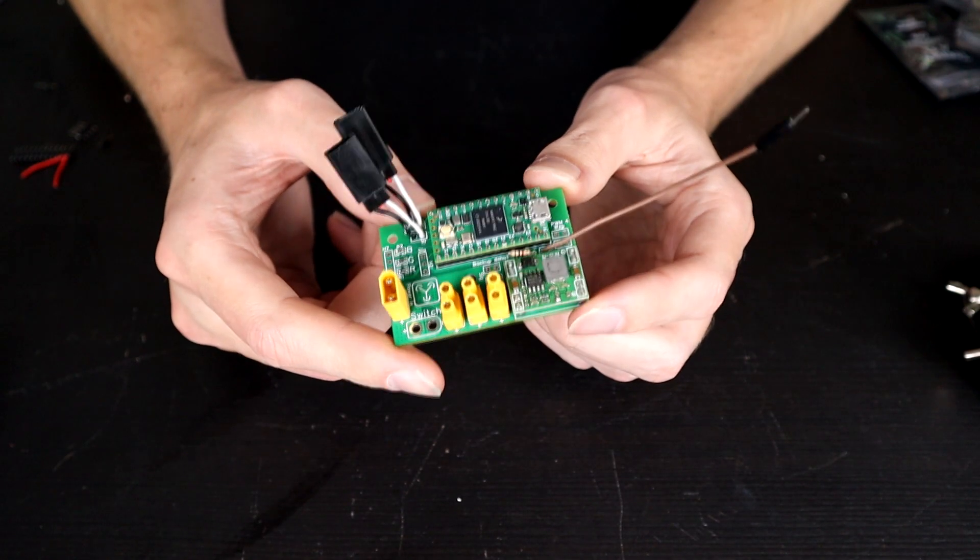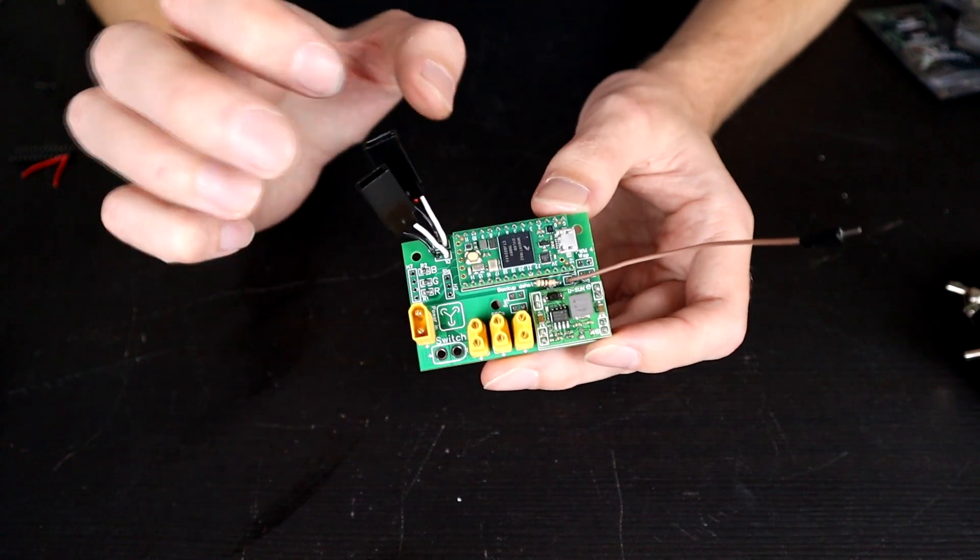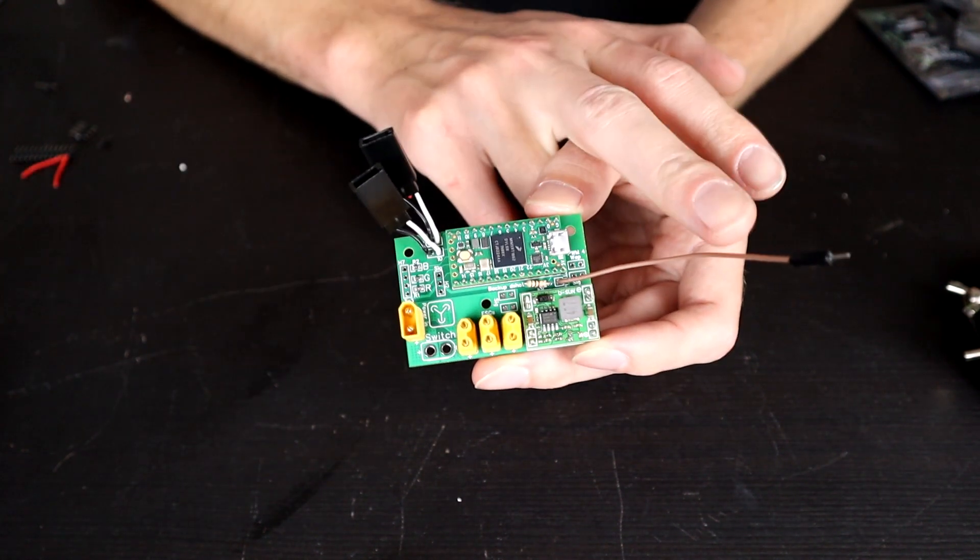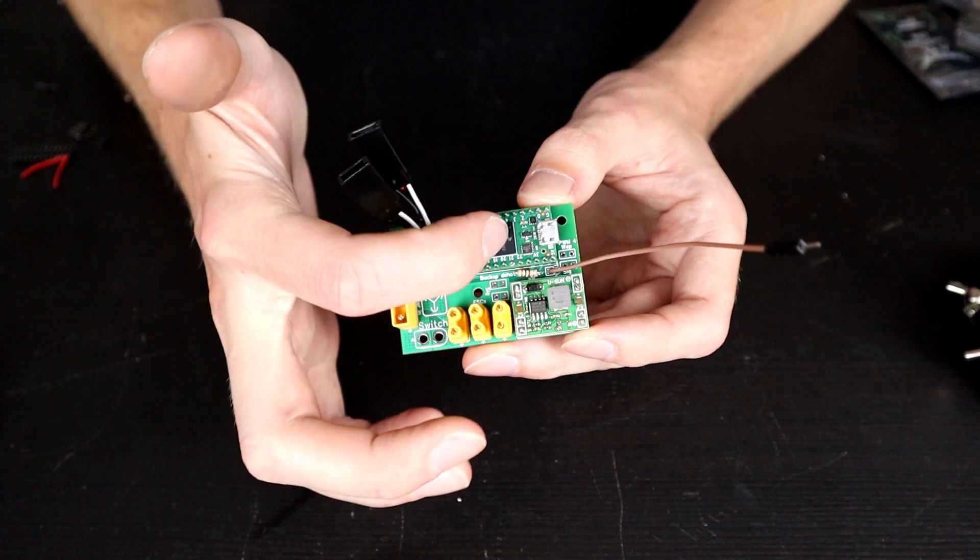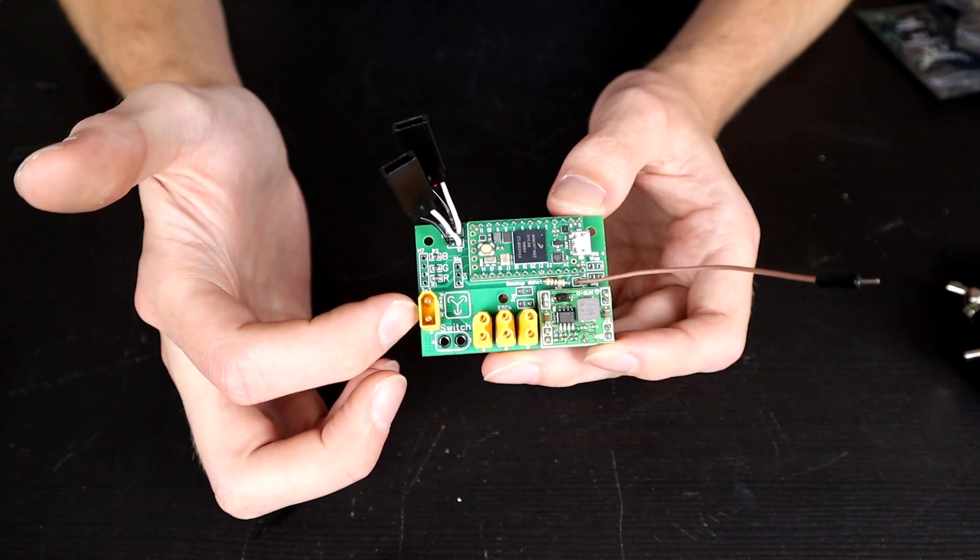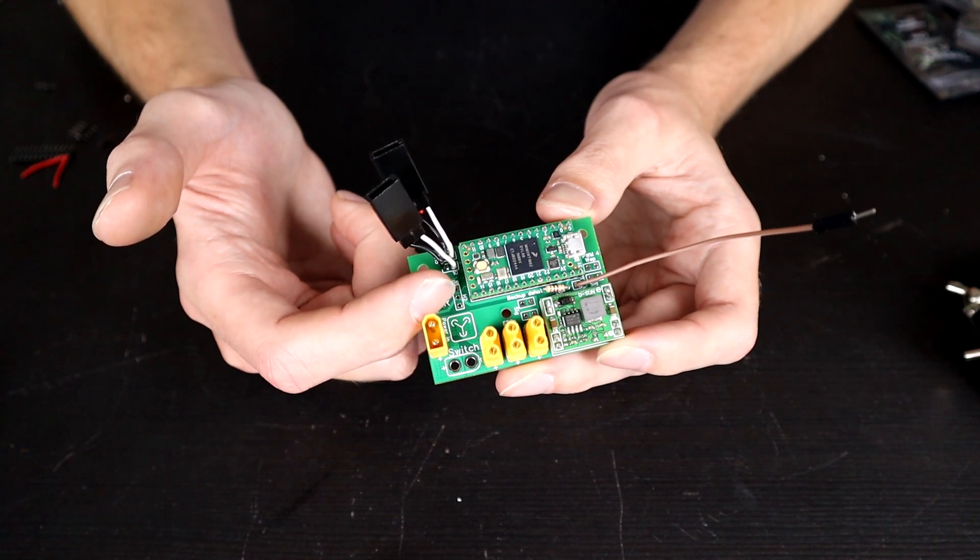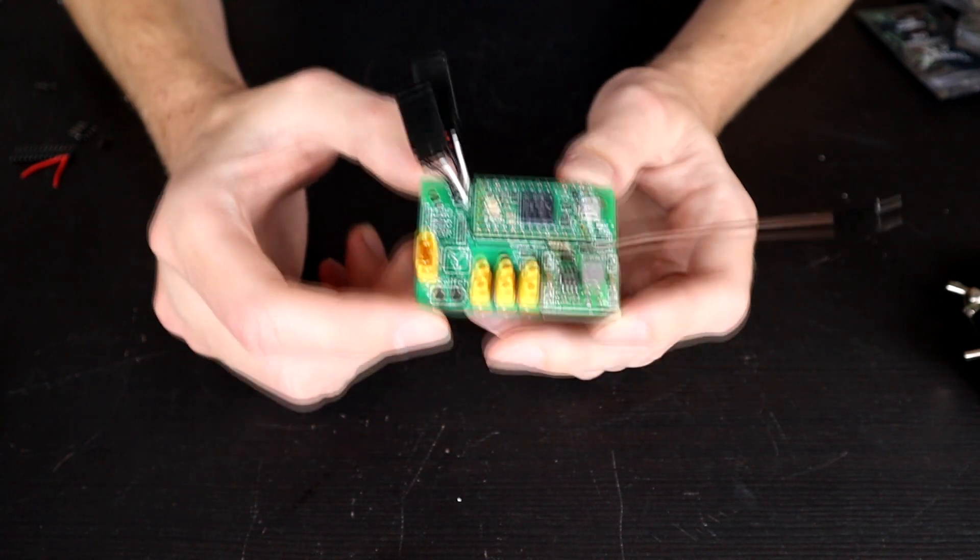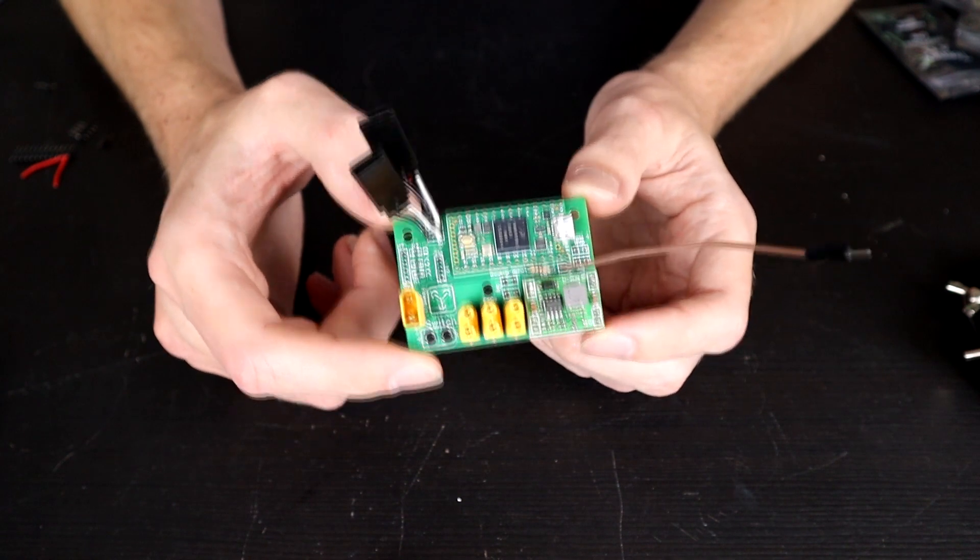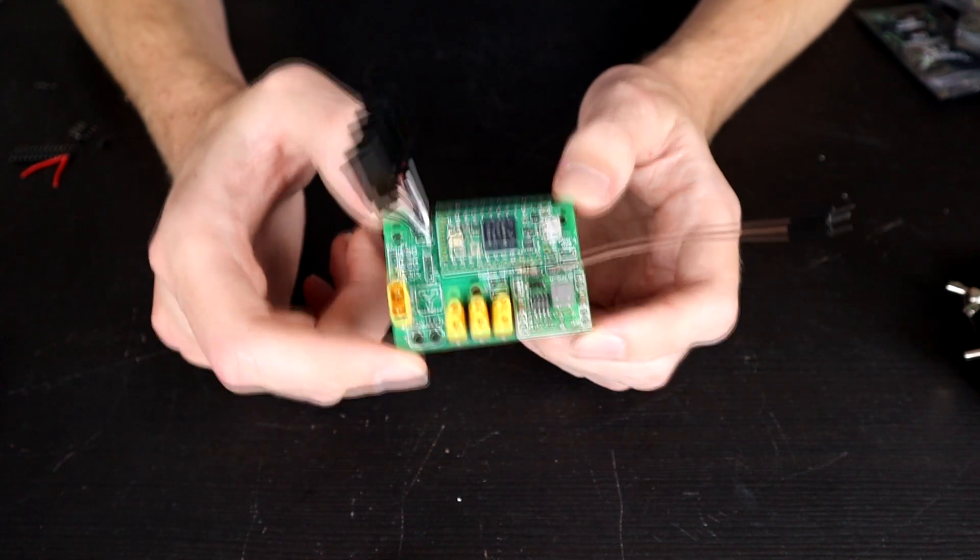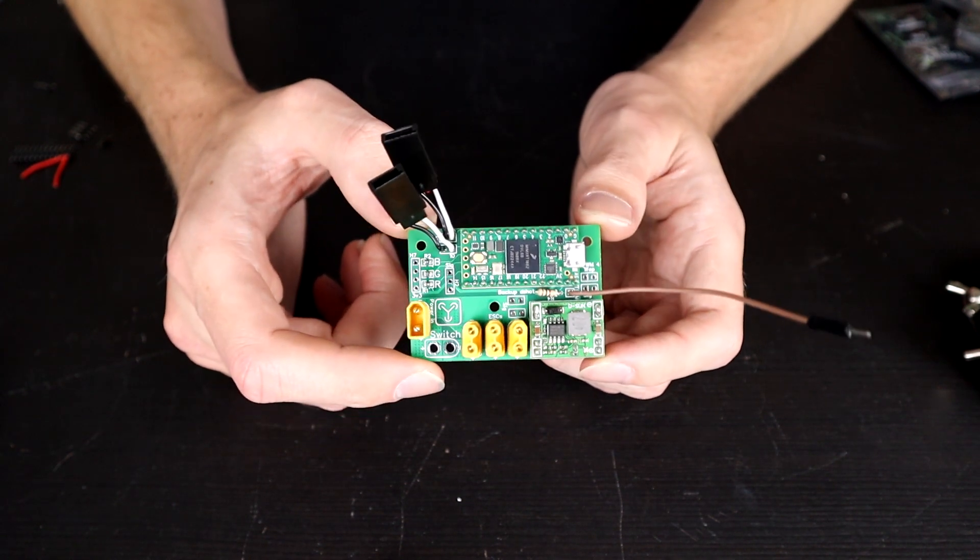So that's our board most of the way assembled. We have plugs for the ESC including telemetry, we have the 5 volt in, we have the chip in, we have the power distribution in minus the switch, but we don't have the LED or the receiver plug in yet. And that's because I want to get the wiring sorted out for this once we have the rest of the chassis built, which means it's time to talk about weapons.